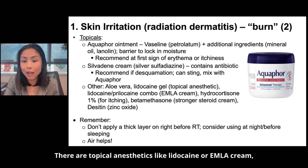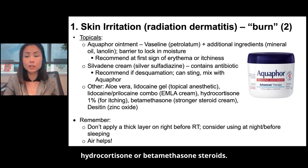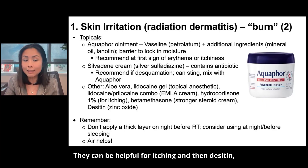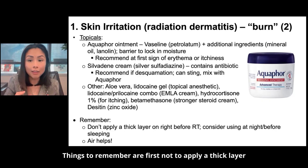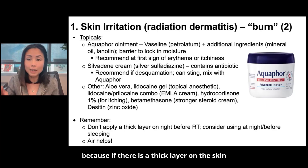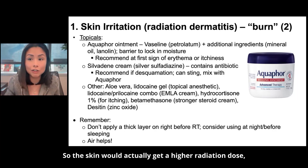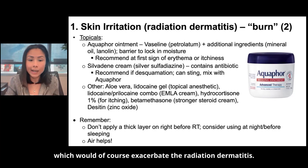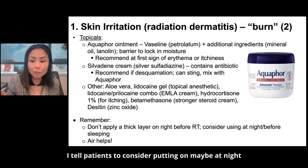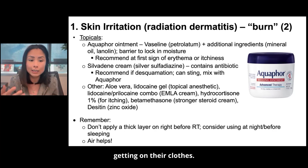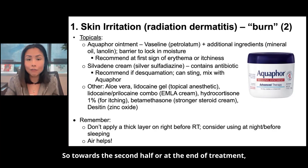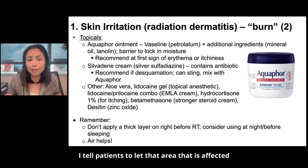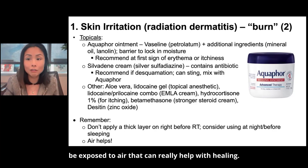There are topical anesthetics like lidocaine or EMLA Cream. Hydrocortisone or betamethasone are steroids that can be helpful for itching. Desitin, which is zinc oxide, some patients also find helpful. Remember: do not apply a thick layer right before radiation, because a thick layer on the skin can actually alter the dose — the skin would get a higher radiation dose, which would exacerbate the dermatitis. I tell patients to consider putting it on at night. Airing the area out also helps — towards the end of treatment, let the affected area be exposed to air.